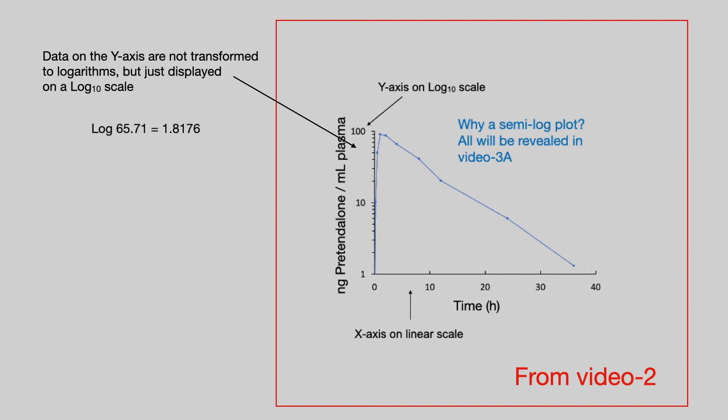So, for example, if you have a drug concentration of 65.71 nanograms per mil, you do not take the logarithm of that value. You take the actual value and plot it onto the logarithmic scale.